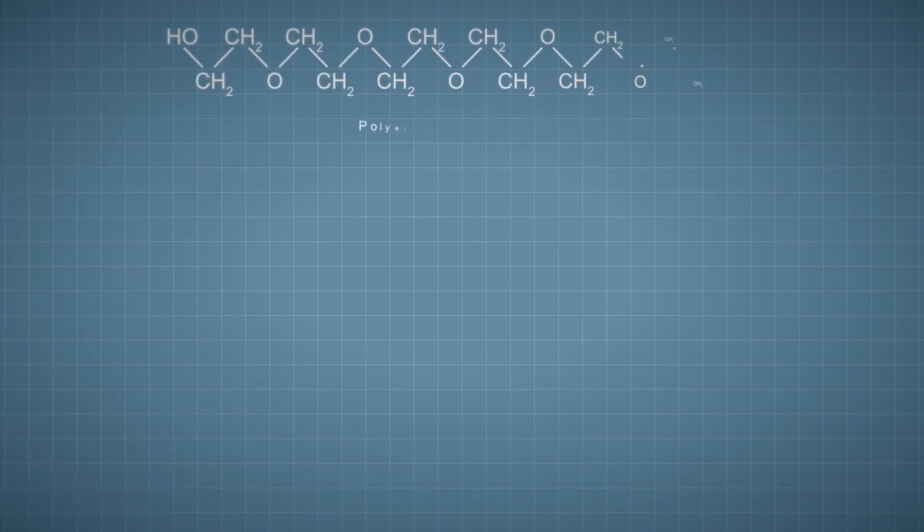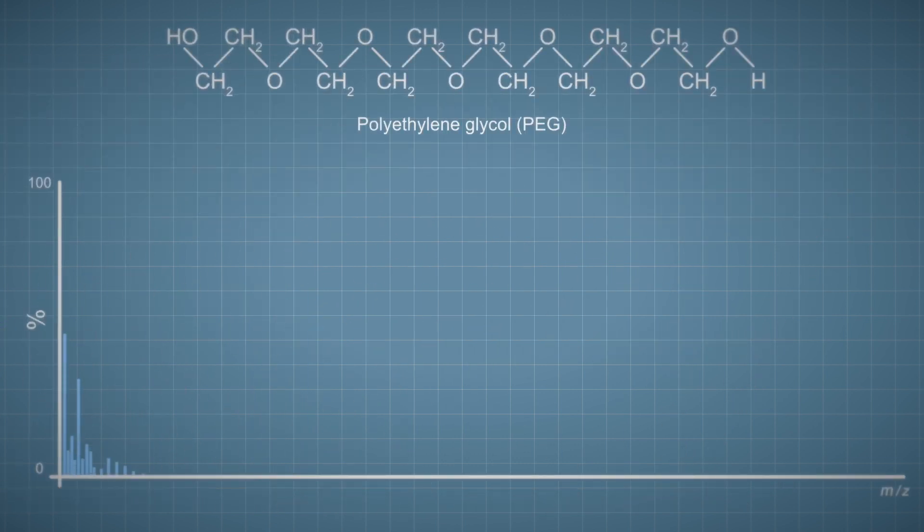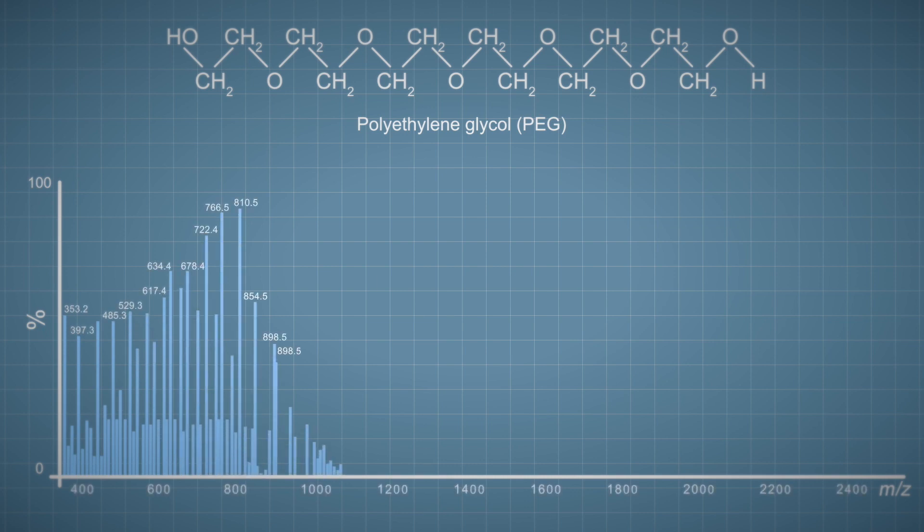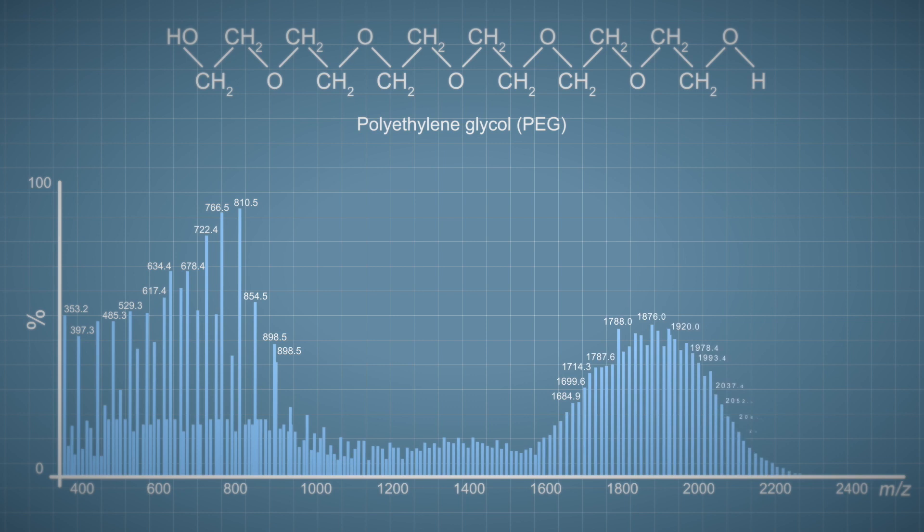In this example the data was acquired on a high resolution mass spectrometer. Here we can see the extremely complex spectrum of a polymer sample called polyethylene glycol or PEG. The structure of PEG has lots of sites where protons and other cations can join the molecule because there are many oxygen atoms regularly spaced along the polymer chain. PEG readily forms ions with multiple charges.